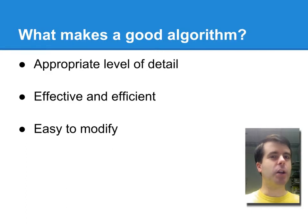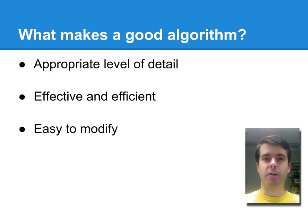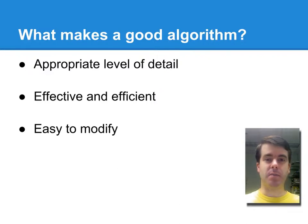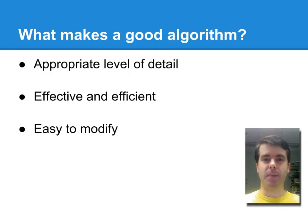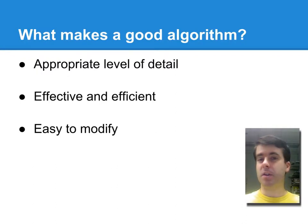As far as what makes a good algorithm, it should be written at an appropriate level of detail. It depends on whether you're writing an algorithm for people to discuss, or whether you need to write an algorithm at a level that the computer can execute, which needs to be very, very specific. It should be both effective and efficient. An effective algorithm is one that is reliable, that will work every time. An efficient algorithm is one that works as quickly as possible. Those two things are not necessarily exclusive — you can have an algorithm that works all the time but is very slow, or a very fast algorithm that doesn't work.